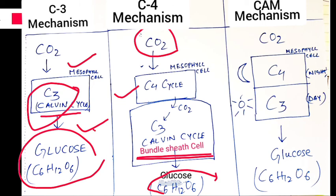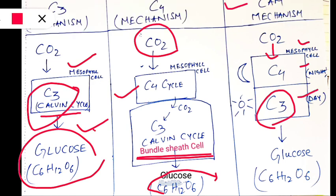In CAM plants, a special technique is used. In the mesophyll cell, carbon dioxide enters the C4 cycle during night time to save water. During day time, the C3 cycle takes place in the same mesophyll cell. So in CAM, the C4 cycle happens at night and the C3 cycle happens during the day, all within the same mesophyll cell.